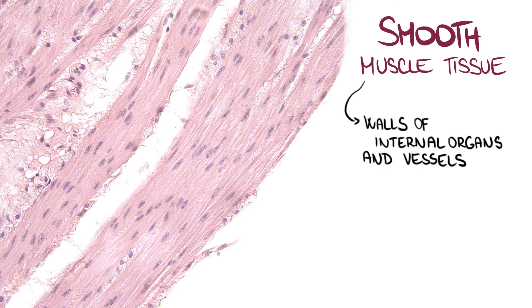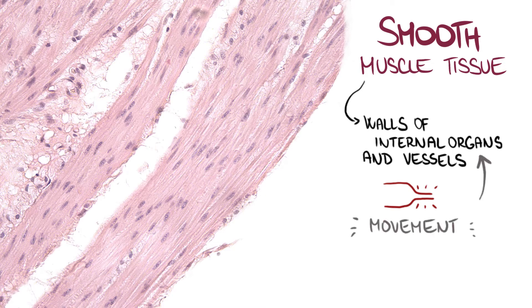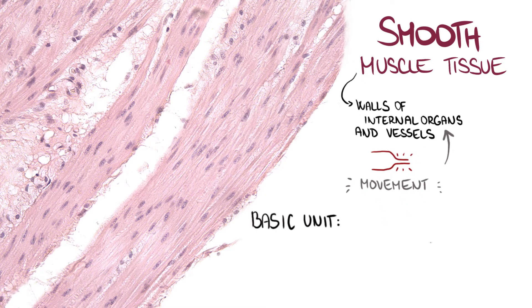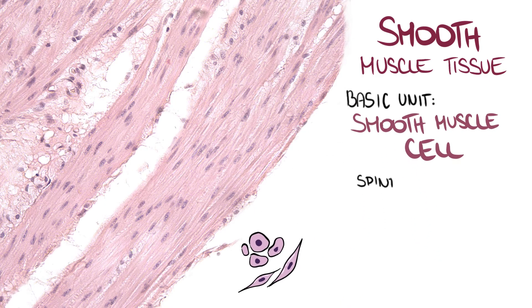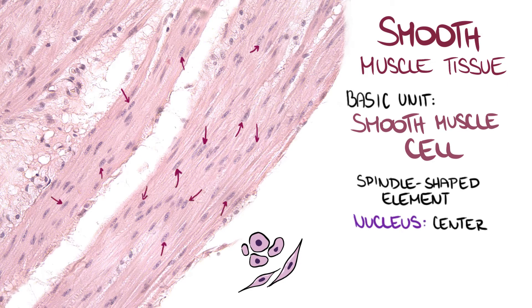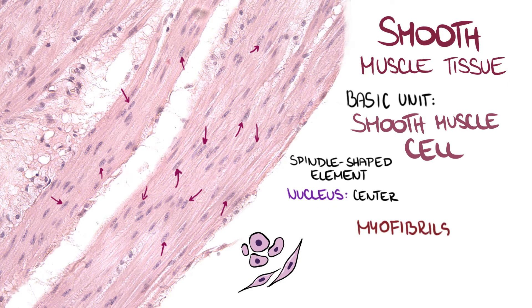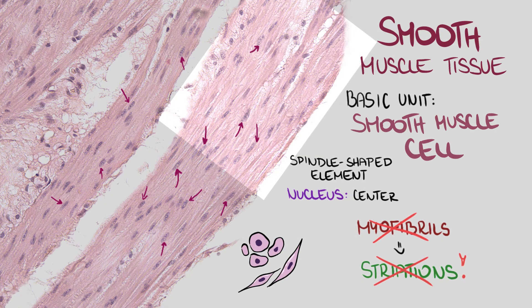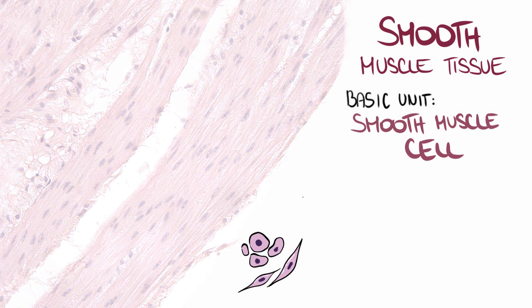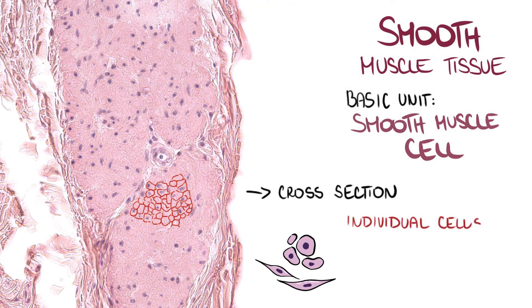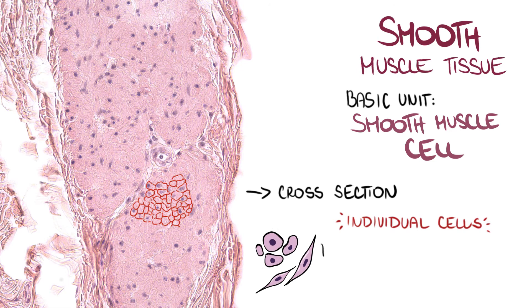Smooth muscle tissue makes up the walls of our internal organs and vessels. It's responsible for constriction of our vessels and for movement of contents inside our internal organs. The basic unit of smooth muscle tissue is a smooth muscle cell. It's a spindle-shaped element with one cigar-like shaped nucleus located in the center of the cell. It doesn't contain myofibrils, thus it's not a striated structure. In longitudinal sections we can appreciate a bunch of cells with nice nuclei, although we cannot distinguish their borders. In cross-section we can see individual cells. Length of the smooth muscle cell can be up to 500 micrometers, but its diameter is as small as 6 micrometers.